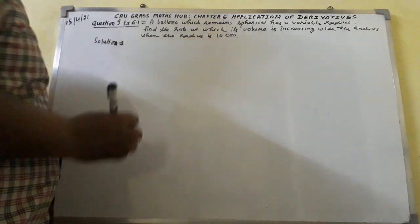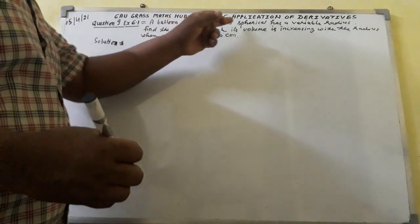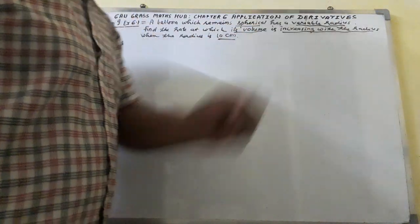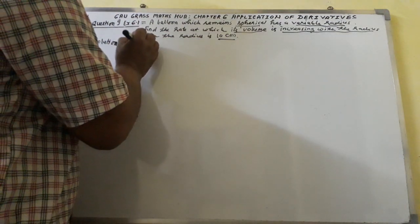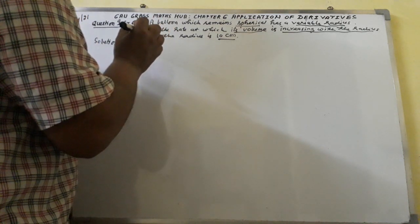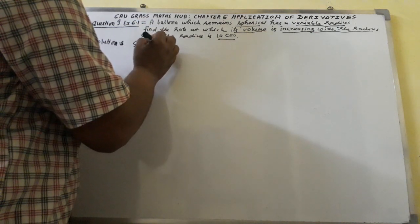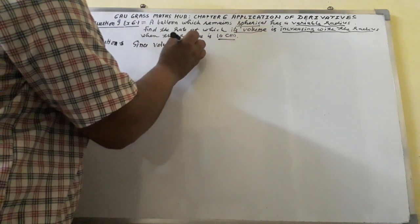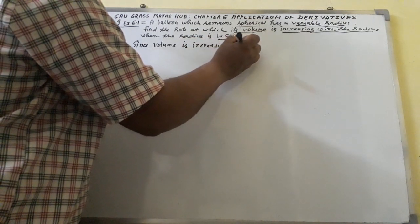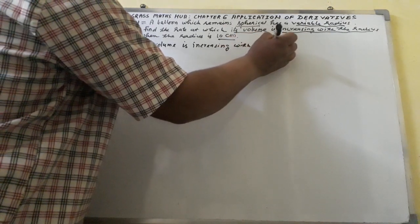It is implied that here, a balloon which remains spherical has a variable radius. Find the rate at which its volume is increasing with the radius when the radius is 10 cm. The volume is increasing with respect to radius.